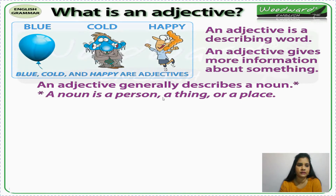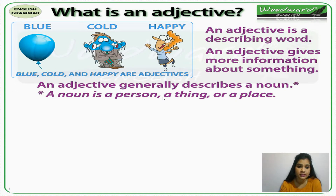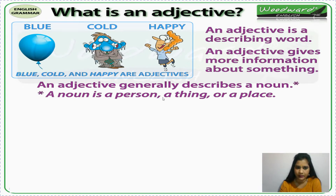Let's see one example. There is a balloon that is blue in color — can we say 'blue balloon'? Balloon is a noun and 'blue' is describing it, so it becomes an adjective. Cold weather — that person is feeling so cold. Weather is a noun, so 'cold' becomes an adjective. Happy girl — girl is a noun and 'happy' is describing the girl, so 'happy' becomes an adjective.